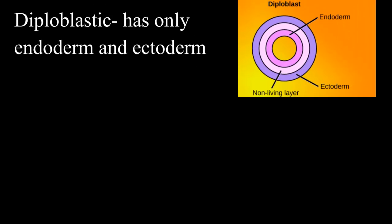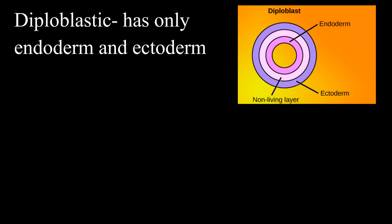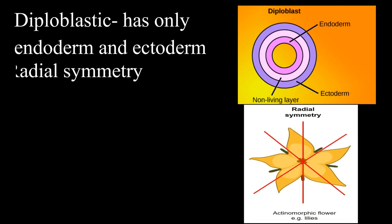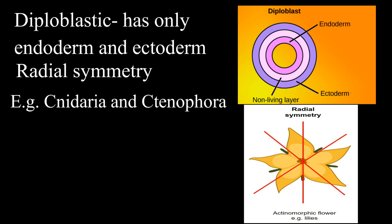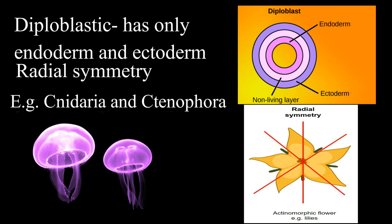The first metazoan type is the diploblast. They have only two germ layers — endoderm and ectoderm — and mesoderm is either absent or rudimentary. They have radial symmetry, hence are included in Radiata. Examples are phylum Cnidaria (Coelenterata) and phylum Ctenophora.